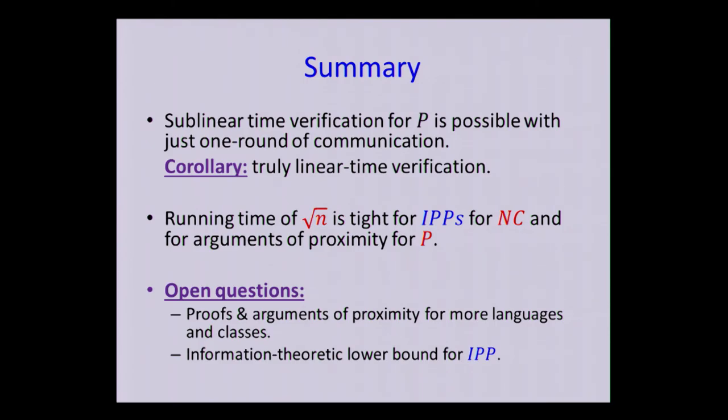Using these results on sublinear time verification, you can actually get exact results without the proximity with exact linear time verification, which is just an acute thing to know. That's the upper bound that we have. In terms of a lower bound, we show that square root of N is in fact tight for these interactive proof of proximities for a language in NC1, and in a sense for arguments of proximity for P.